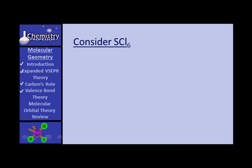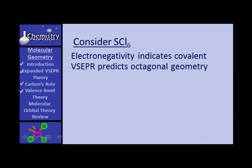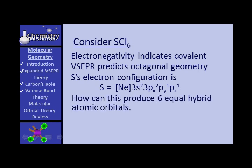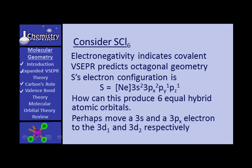Let's consider SCl6. Electronegativity indicates it's covalent, and VSEPR predicts an octahedral geometry. Sulfur's electron configuration is neon with 3S2, 3Px2, 3Py1, 3Pz1, and it has to form six equal hybrid atomic orbitals. It's going to have to do a bunch of promoting — perhaps moving a 3S and a 3Px electron to the 3D1 and 3D2, respectively, giving six parents.